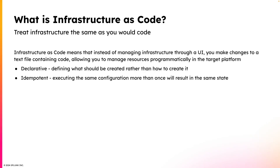The other key principle is that infrastructure as code is idempotent. If you were defining an EC2 instance in your IAC tool's configuration file and you applied that configuration multiple times to your target platform, it wouldn't result in the EC2 instance being created multiple times. It would recognize that that EC2 instance had already been created, and so it wouldn't attempt to create it again.